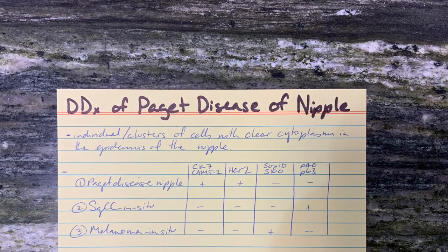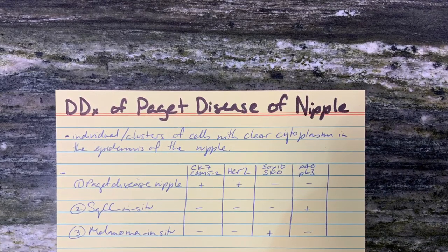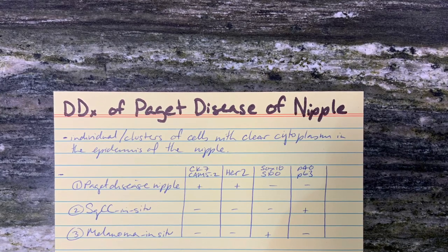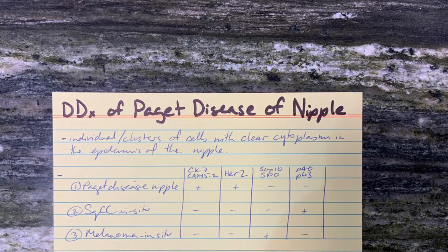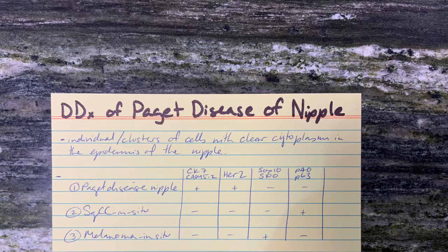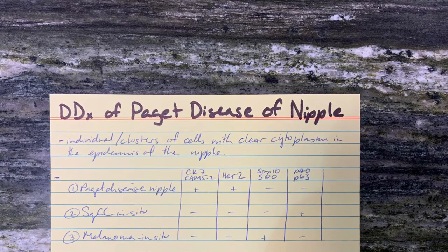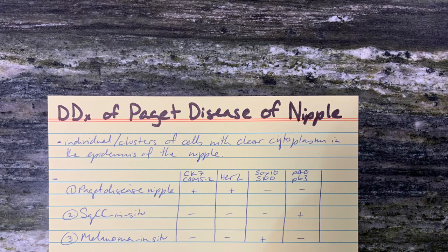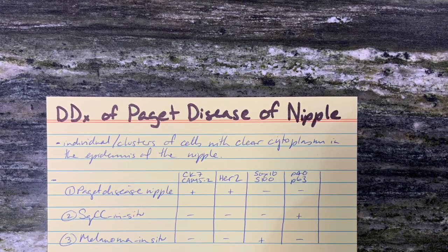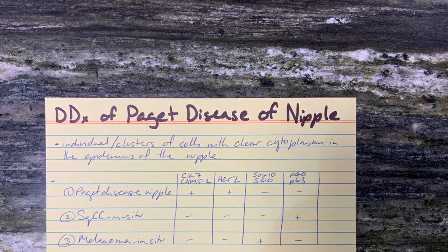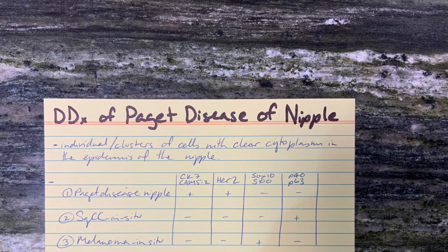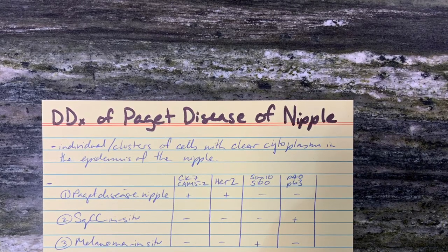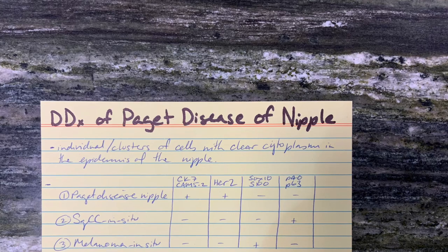Paget disease of the nipple and the underlying cells will be positive for CK7, CAM5.2, and HER2. Squamous cell carcinoma in situ will be positive for P40 and P63. Melanoma in situ will be positive for SOX10 and S100.